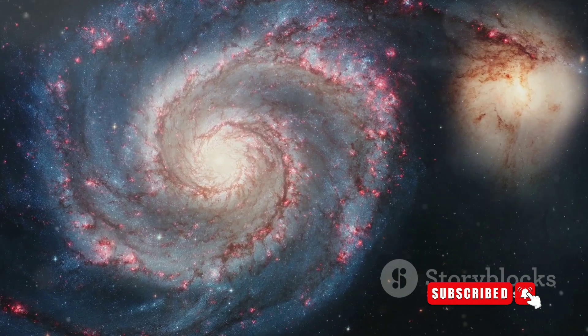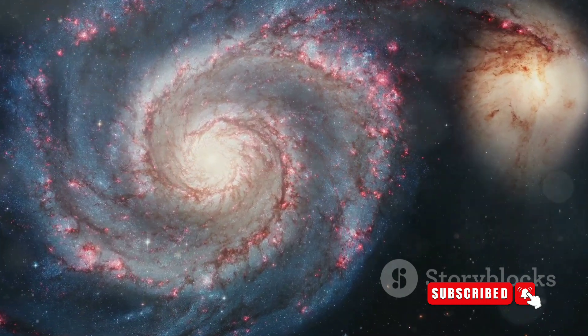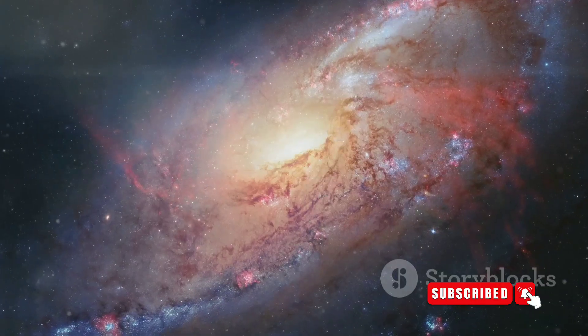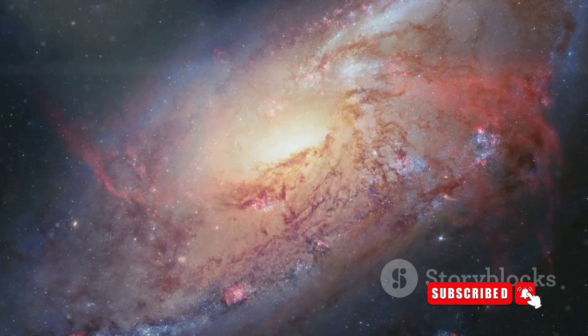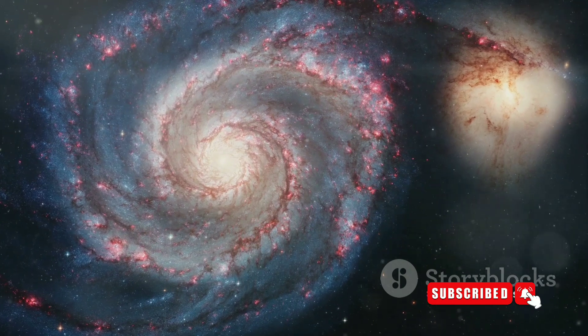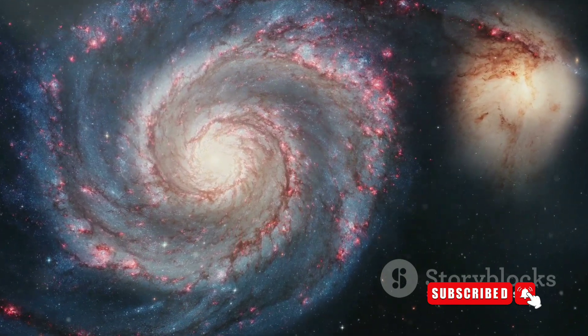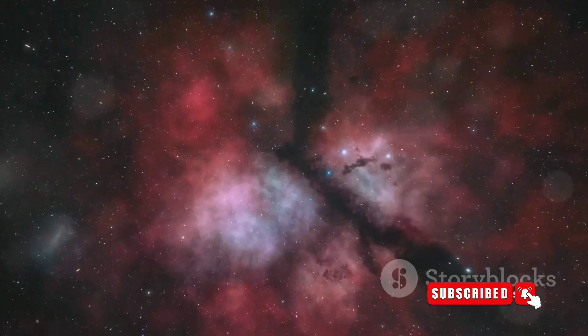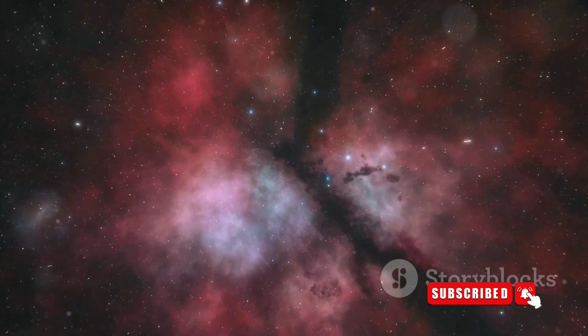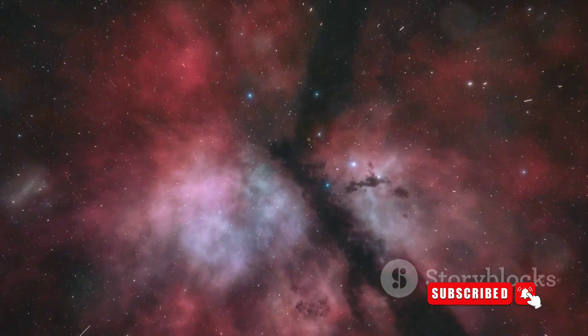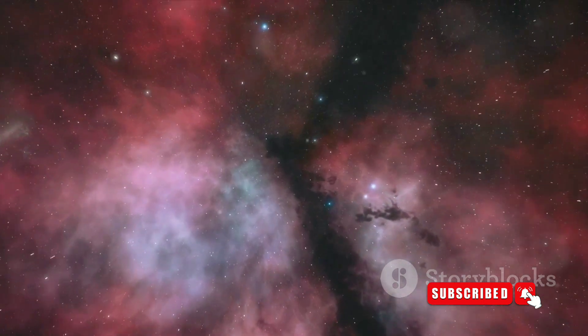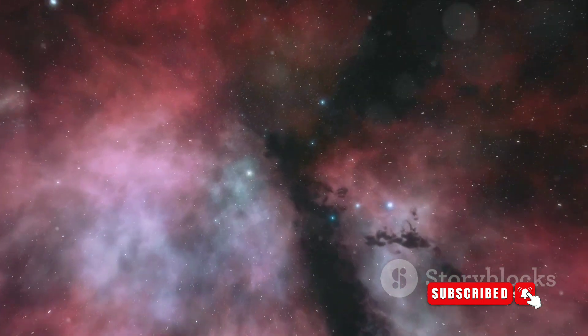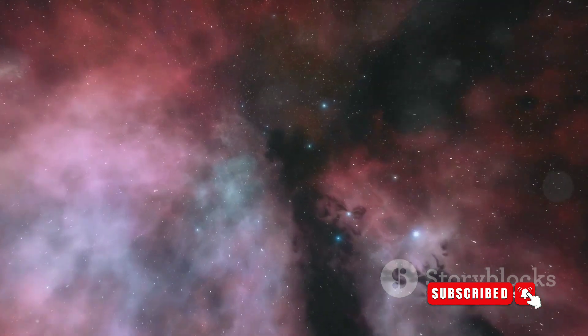The Milky Way is a barred spiral galaxy, which means it has a central bar-shaped structure composed of stars with spiral arms winding out from the ends of the bar. This structure is quite common in the universe, and our galaxy is a pretty average example of it. But within this average galaxy is an extraordinary number of stars. Estimates suggest that there are about 200 billion to 400 billion stars in the Milky Way. That's more stars than there are grains of sand on all the beaches on Earth.